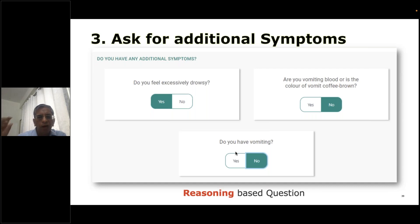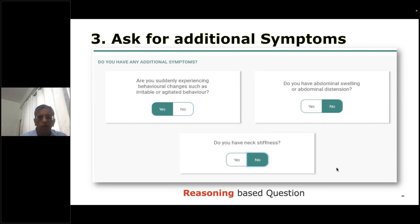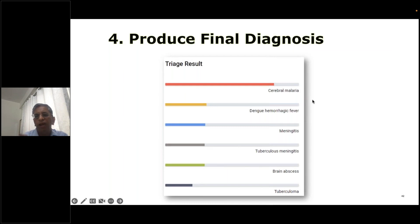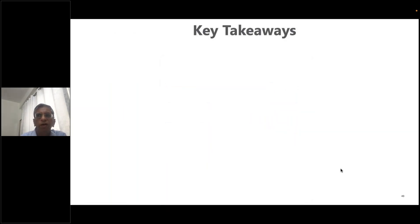Once the AI has formed an initial opinion about possible diseases, it asks AI-reasoning-based questions designed to achieve differential diagnosis — distinguishing the top disease from others. It might ask about excessive drowsiness or vomiting. If still not confident, more follow-up questions are asked. Once secondary diseases are ruled out and the system is confident on the primary diagnosis, it concludes — for example: 'You have cerebral malaria' — along with ranked alternatives. This was the full journey of a stateful diagnostic conversation system.